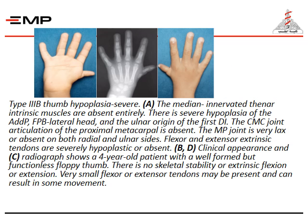Type three-B thumb hypoplasia is severe: the median-innervated thenar intrinsic muscles are absent entirely. There is severe hypoplasia of the abductor pollicis, flexor pollicis lateral head, and ulnar origin of the ulnar indicis. The carpometacarpal joint articulation of the proximal metacarpal is absent. Flexor and extensor extrinsic tendons are severely hypoplastic or even absent.